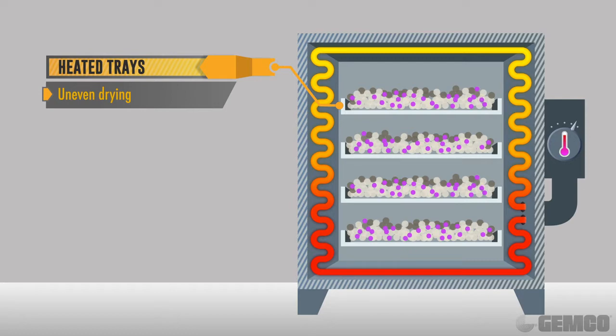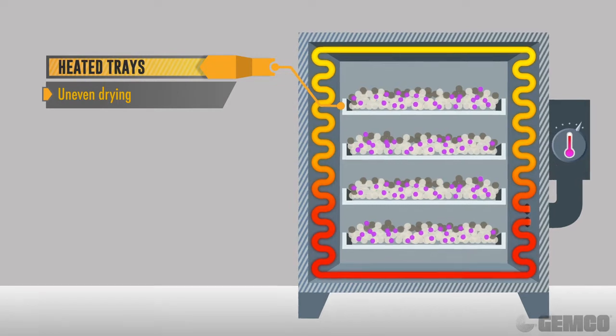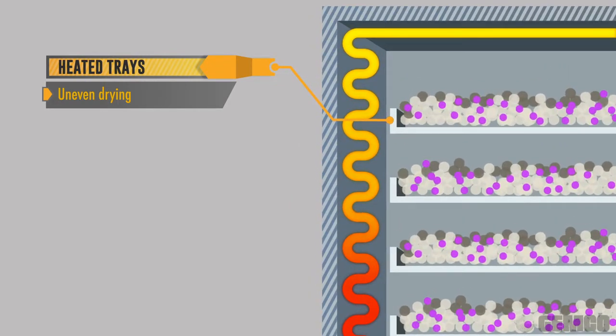Relying strictly on heat to circulate around a stationary tray of material poses a challenge. Heat with no movement is similar to baking, and the material will cook unevenly.